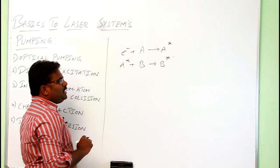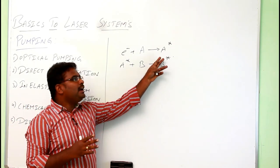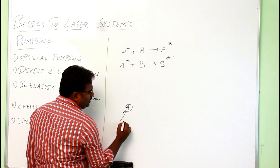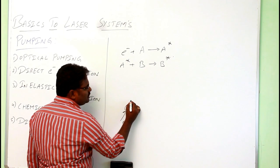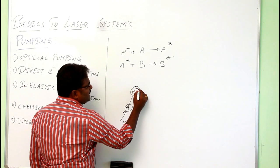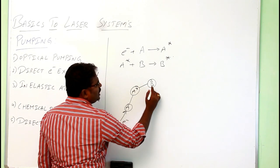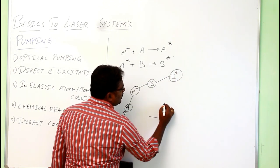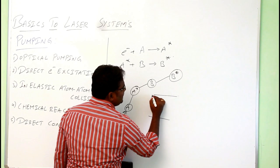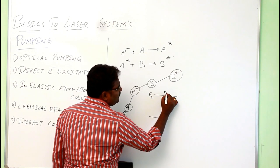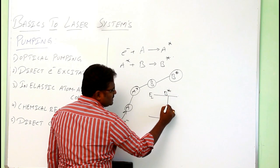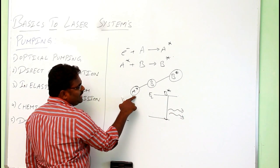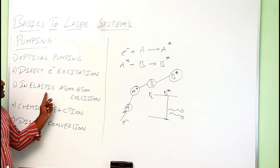The excited atom B will not remain in the higher energy level for long. While it is coming down, it produces laser light. In summary: atom A is excited by a fast-moving electron, excited atom A collides with atom B in the ground state, atom B goes to the excited state (B*), and as B* returns to the lower energy level, it produces laser light. This is known as inelastic atom-to-atom collision.